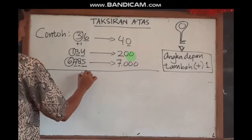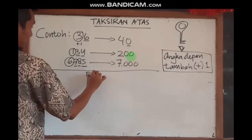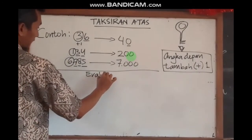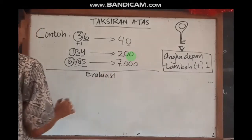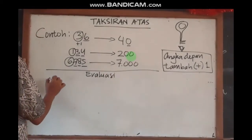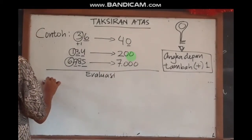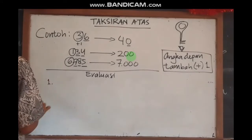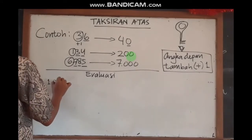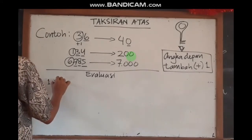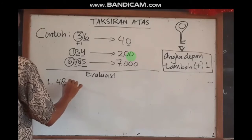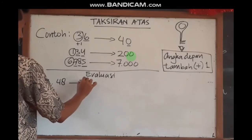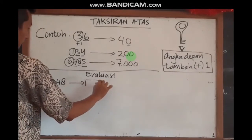Secara yang sangat mudah ya, anak-anak. Sekarang kalian tuliskan evaluasi berikut ini: ubahlah bilangan-bilangan berikut ke dalam bentuk taksiran atasnya. Nomor 1: 48.